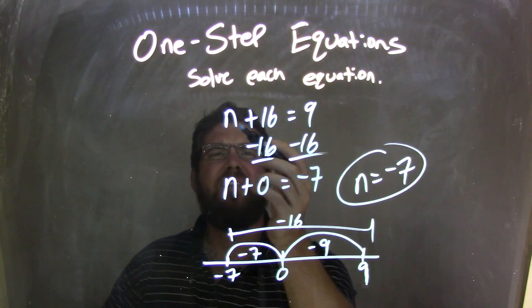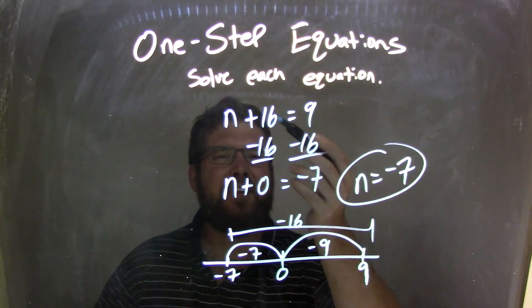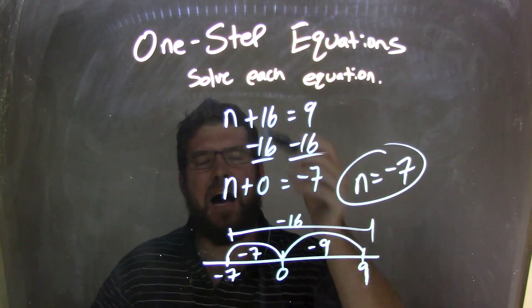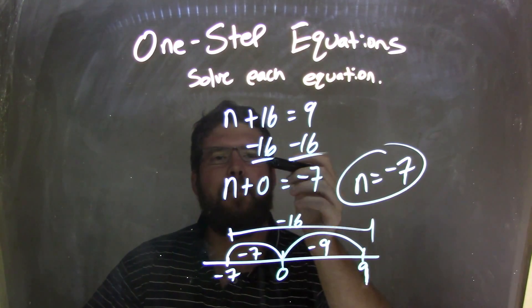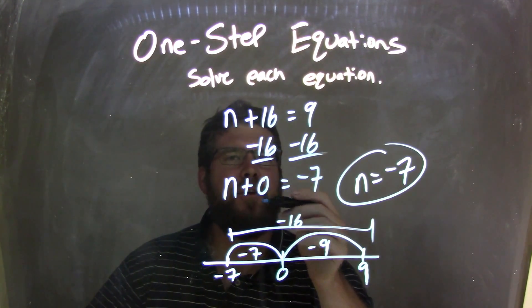So, let's recap. We have n plus 16 equals 9. I'm going to subtract the 16 on both sides, because that's the opposite of addition. Well, 16 minus 16 is 0. That's what I have here. I brought down the n.